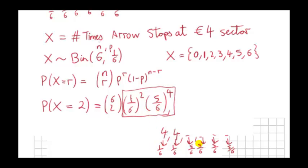We want a four exactly twice, so all other spins must not be fours. The probability of getting a number other than four is five sixths, appearing four times. That's one possibility — the two fours at the start. We multiply all these probabilities together because we have six independent events; each spin of the arrow is independent of the previous. But this is only one possibility, so we must consider all different ways we can get two fours.